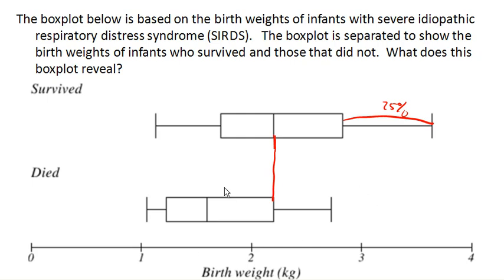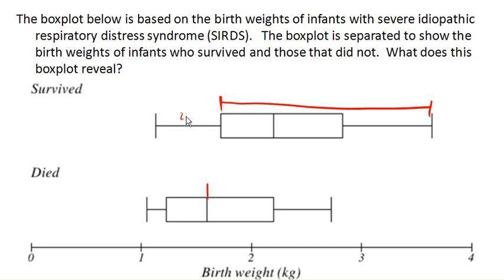Likewise, notice that quartile one of the survivors is bigger than the median of those that died. Remember, quartile one means 25% of the data is below it and 75% is above it. So 75% of infants who survived had a higher birth weight than the median birth weight of an infant that died. This gives us a quick, admittedly informal way to look at data and get some idea of what's going on.